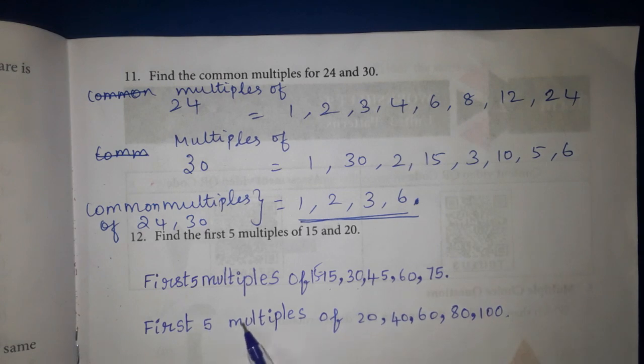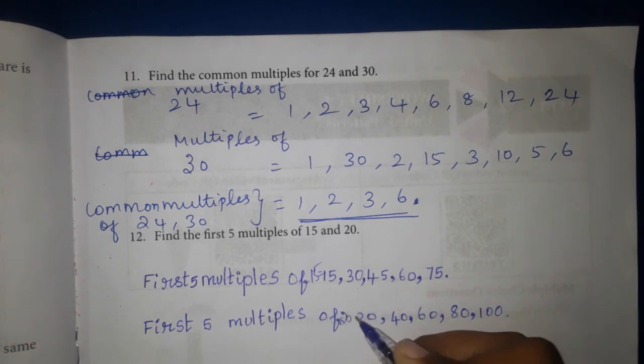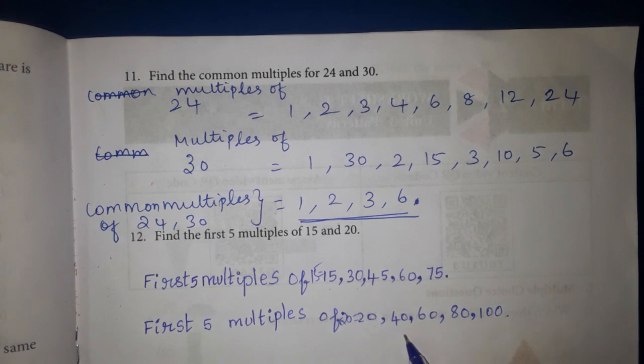First 5 multiples of 20 is equal to 20, 40, 60, 80, 100.